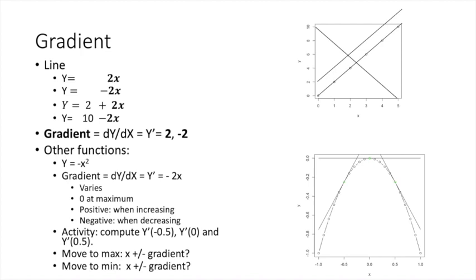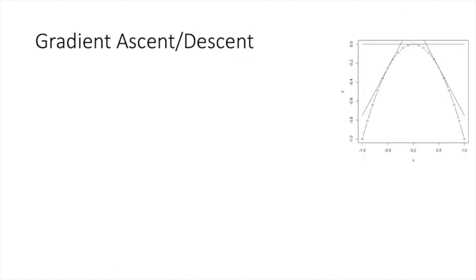Likewise, when our task is to find the minimum value, if adding the gradient moves us towards the maximum, then intuitively subtracting the gradient will take us away from the maximum and towards the minimum. The two strategies make what is known as gradient ascent and gradient descent. When we have to find the maximum value of a function, we use gradient ascent: xi plus 1 equals xi plus alpha times f prime of xi. The gradient is computed by taking the derivative of the function, represented by f prime.